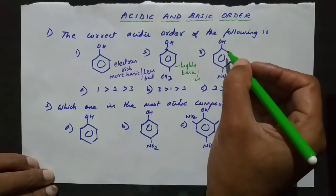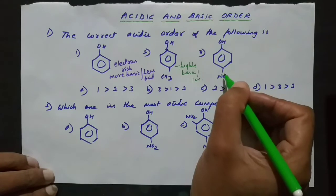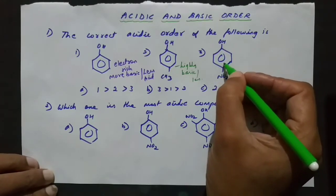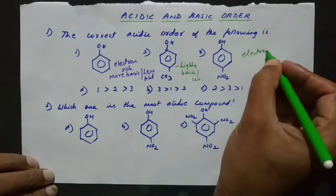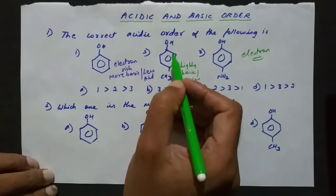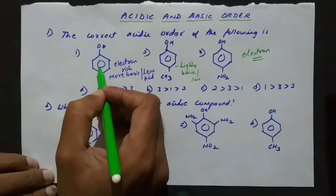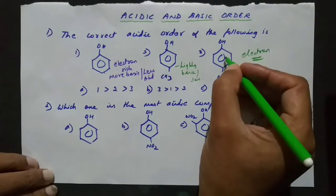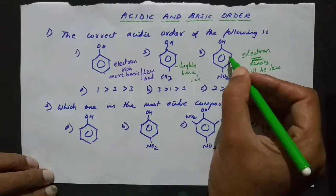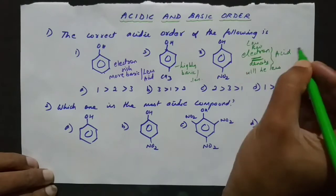The highly basic compound will be the least acidic. In the third case, benzene receives electrons from OH on one side, but NO2 withdraws electrons on the other side, making it somewhat neutral in electron density. So the electron density is not greatly affected. For the acidic order: the compound with NO2 has very low electron density, so H⁺ moves easily — making it the strongest acid. The second most acidic has OH only, and the least acidic has both OH and methyl groups (highest electron density).